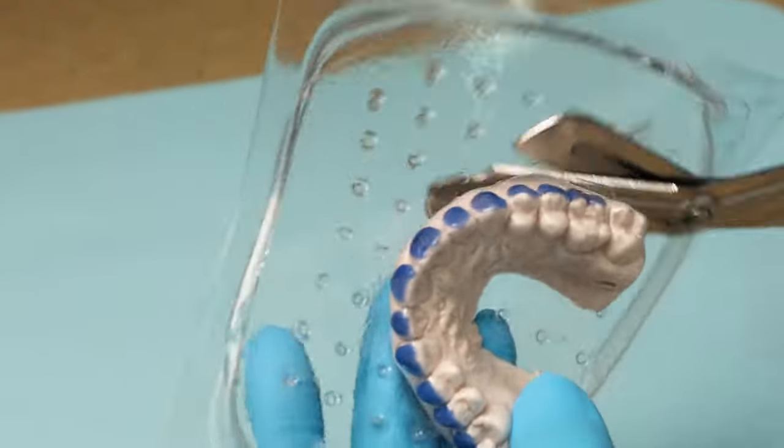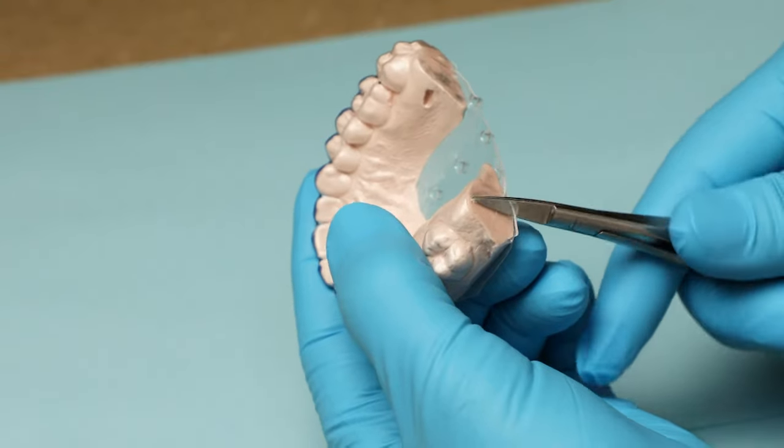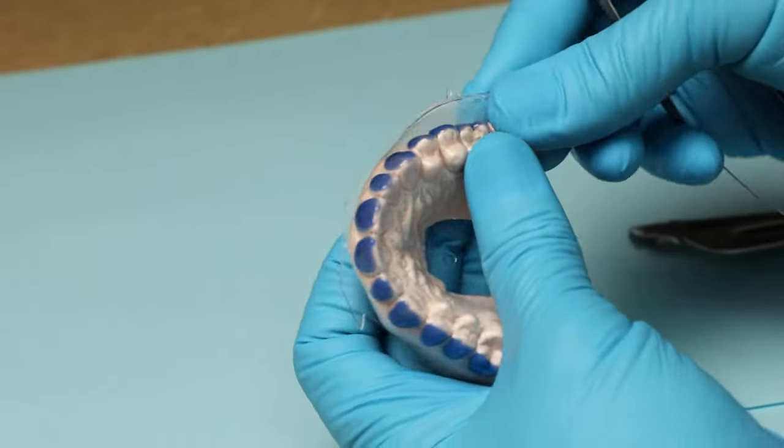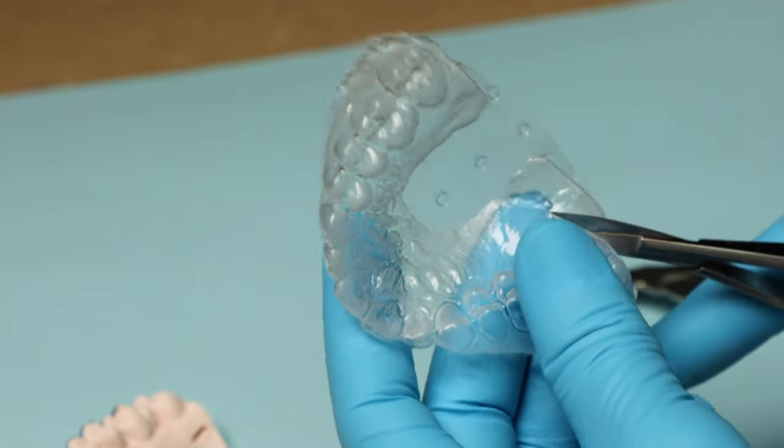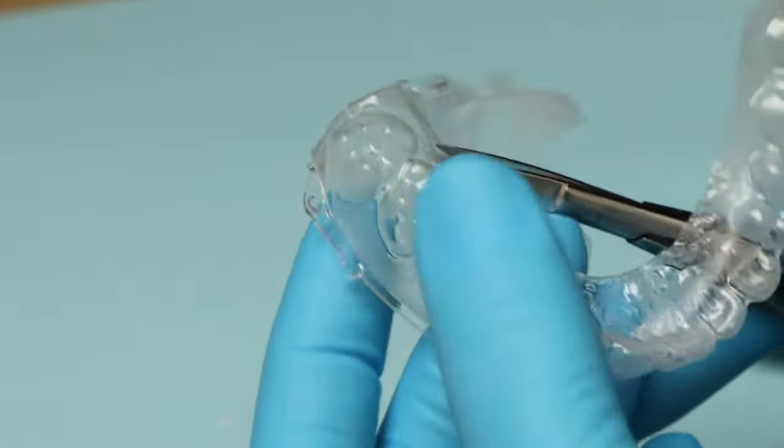Cut away the excess material with Ultradent Utility vinyl cutters. Use ultra-trim scalloping scissors to carefully and precisely trim the tray to the clear line which is at the gingival height, flaming edges to reduce to desired height.